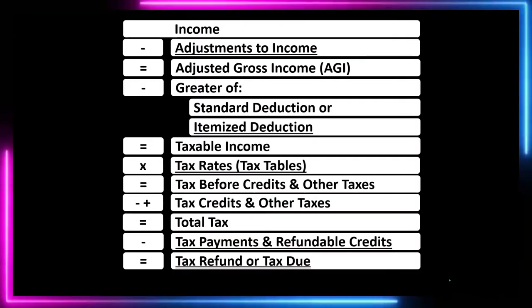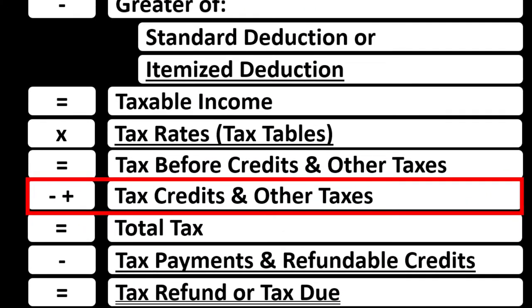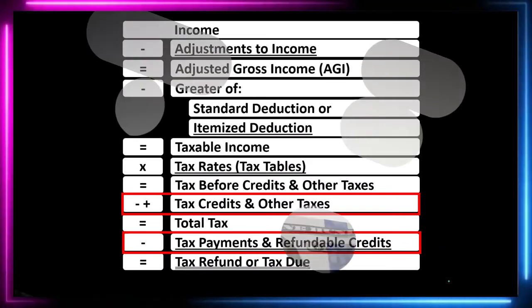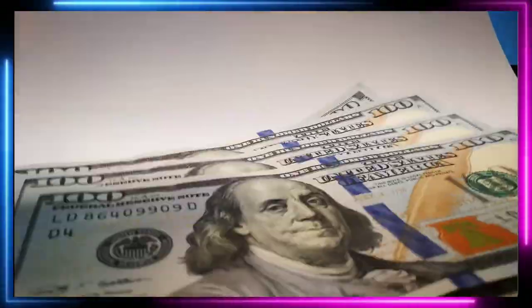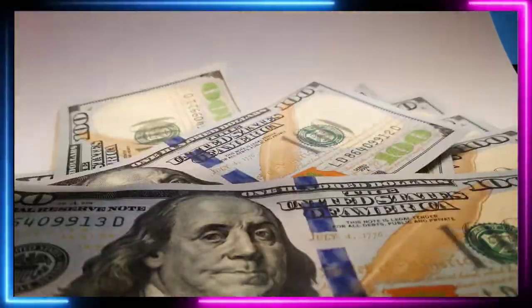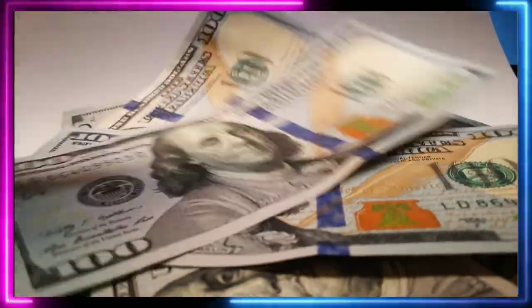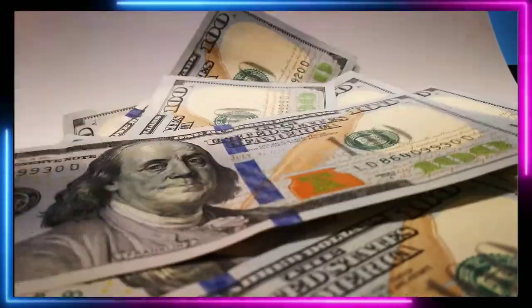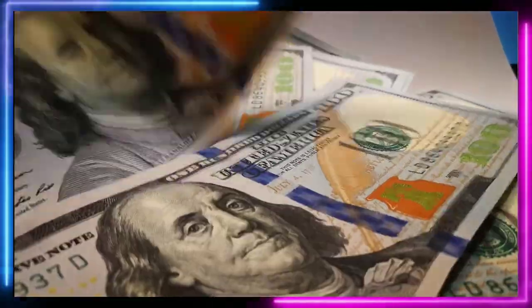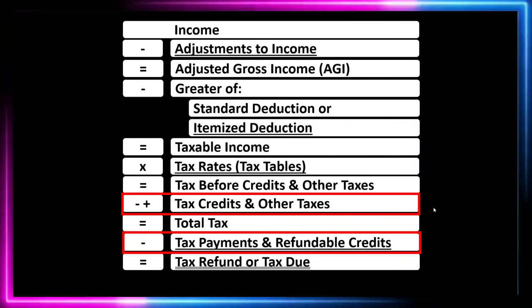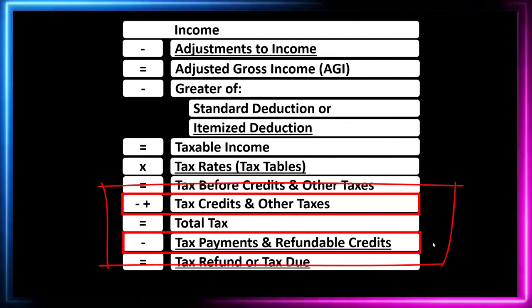Looking at the income tax formula down in the credit area, noting that credits and deductions are both good, but if you had a dollar deduction and a dollar credit, the dollar credit would typically be better because you typically get the full dollar of the credit. A dollar deduction is only a decrease to taxable income, resulting in the tax being calculated based on that taxable income. The credits below are generally categorized into two categories: non-refundable credits and refundable credits.